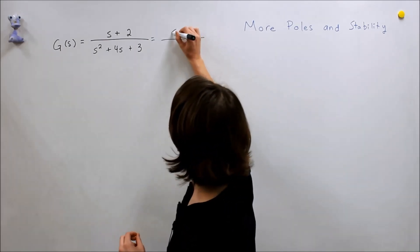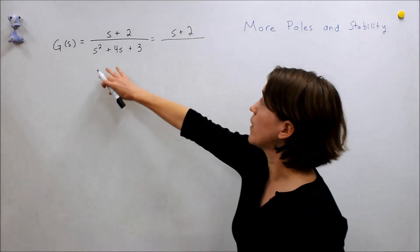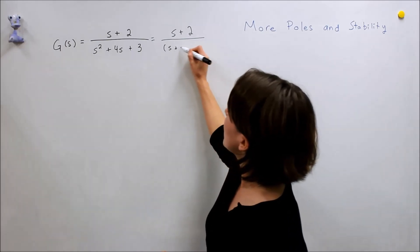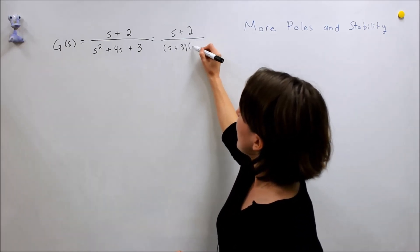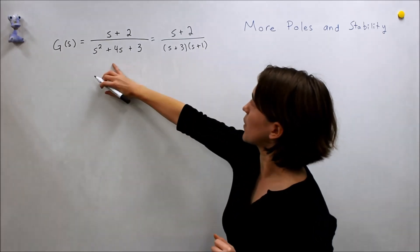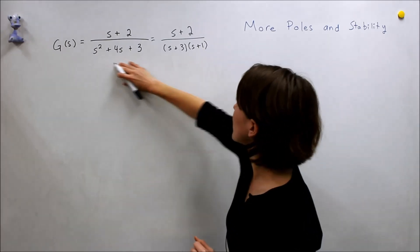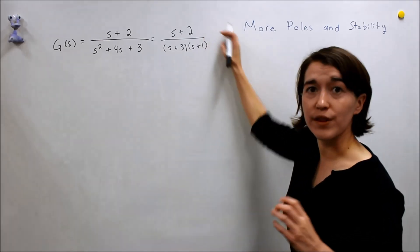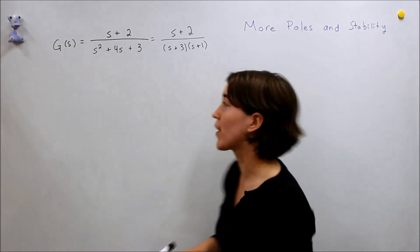We'll write still here s plus 2, the numerator. In the denominator we'll write, we see s plus 3 and s times s plus 1. If we break that down, distribute that, we would get the same expression. From here, once everything is factored, we can easily see what our poles and zeros are.